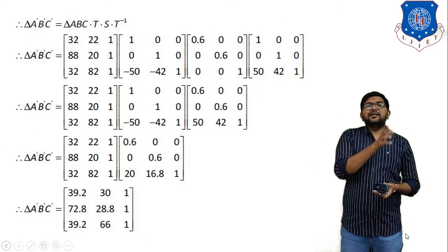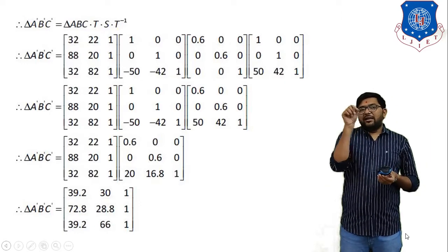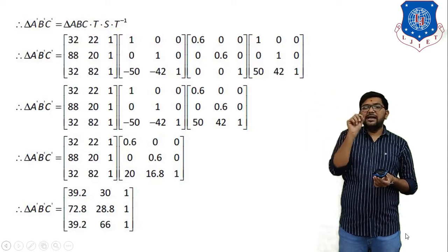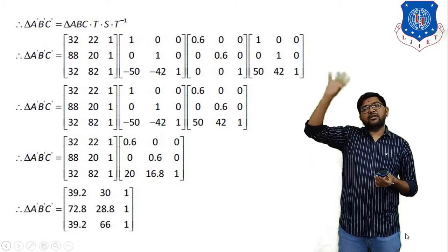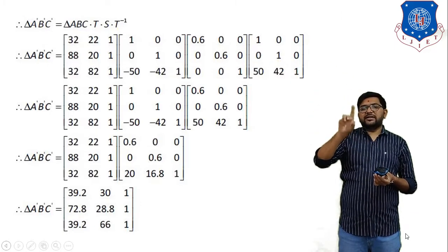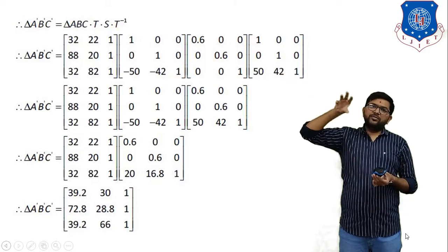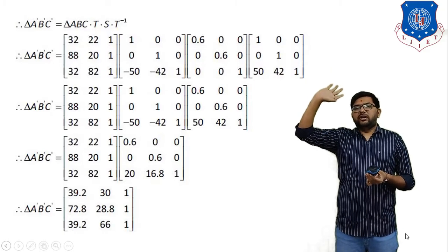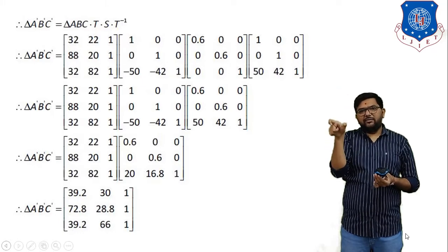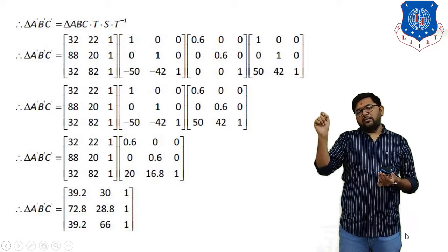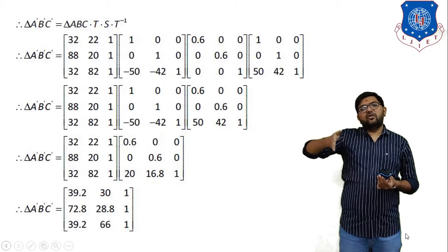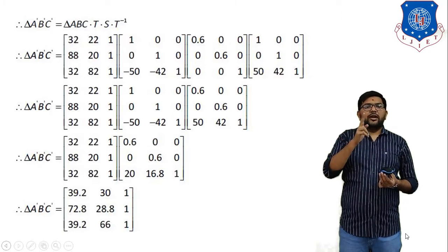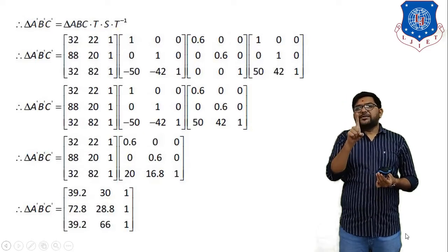Triangle A′B′C′ indicates the new coordinates of the scaled triangle, while triangle ABC is the actual original triangle. The coordinate matrix for triangle ABC — written in homogeneous coordinates (with a 1 appended since all matrices are 3×3) — is: A(32, 22, 1), B(88, 21, 1), C(32, 82, 1). This is the triangle ABC. Now the first process is translation.